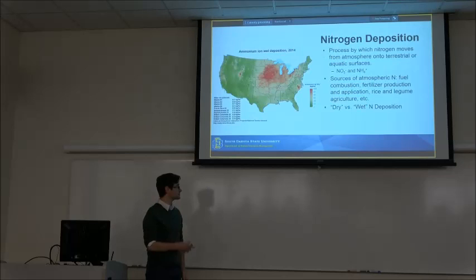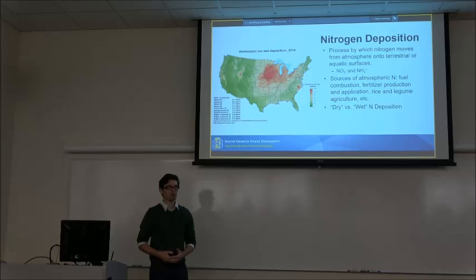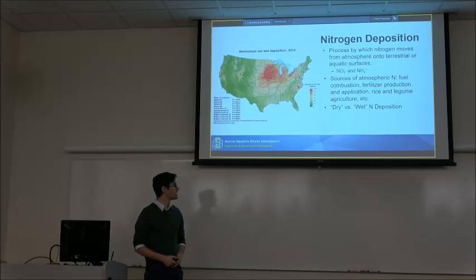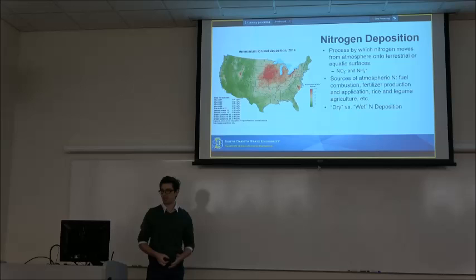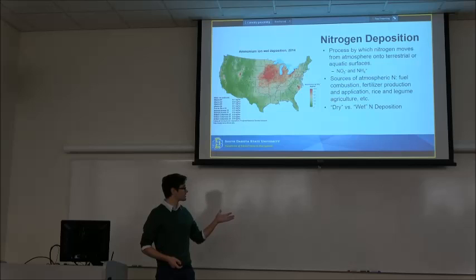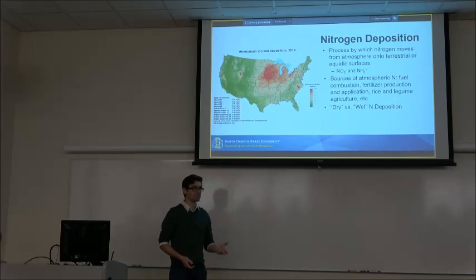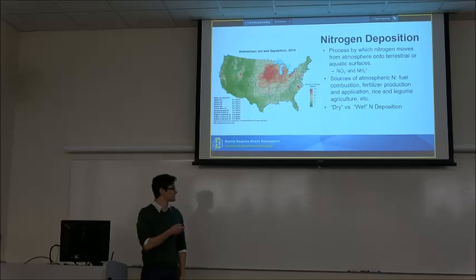Nitrogen deposition is a process in which atmospherically suspended reactive forms of nitrogen are deposited onto land surfaces. Most commonly, this is nitrate and ammonia, which are the two forms of nitrogen that are readily available to plants. Sources of this nitrogen range from fertilizer production and application to fossil fuel combustion — a lot of it comes from anthropogenic sources. It comes down in two manners: a dry manner and a wet manner. During dry deposition, the nitrogen precipitates out of the air column in a particulate form, whereas in the wet manner it's picked up by rainfall or snowfall and then brought down to the land surface.